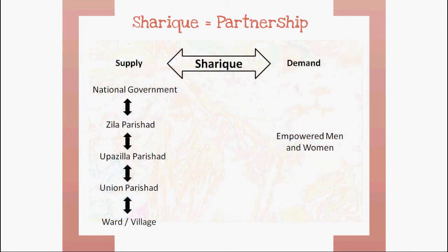In practice, this means working towards three outcomes. First, supporting the lowest tiers of government — the Union Parishats or UPs and the Upasila Parishats — so they manage their public affairs and resources in a more participatory and inclusive, transparent and accountable way.